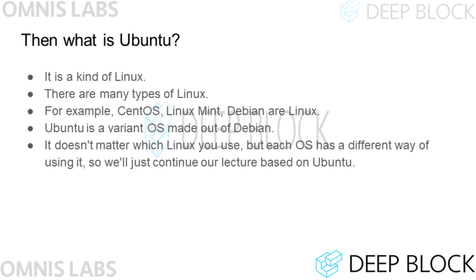Ubuntu is a kind of Linux, and there are many different types of Linux. Some popular ones include CentOS, Linux Mint, and Debian. Ubuntu is an open source operating system modified from Debian. It doesn't matter which Linux you use, but this course will be based on the Ubuntu Desktop Operating System.